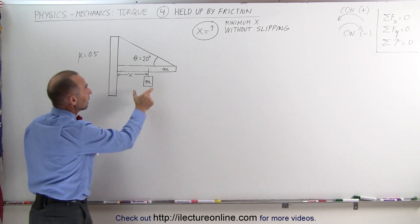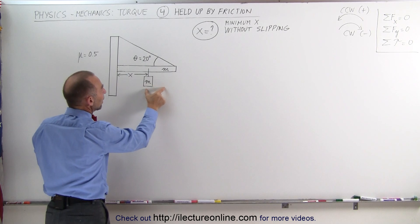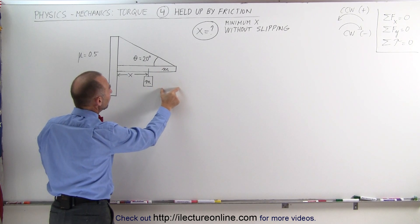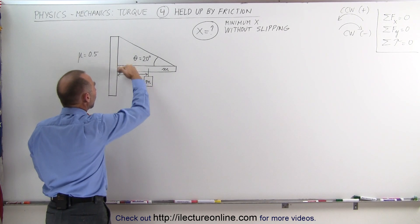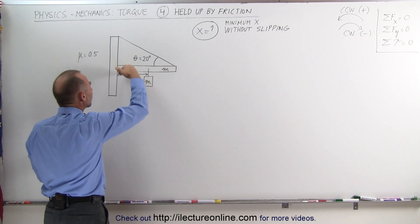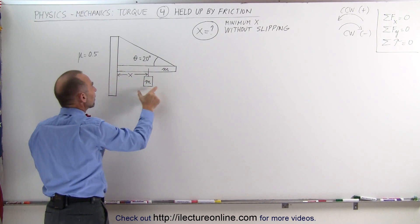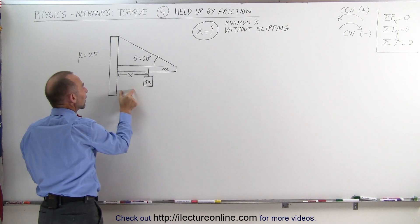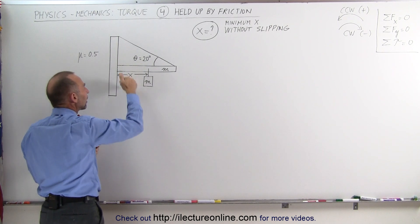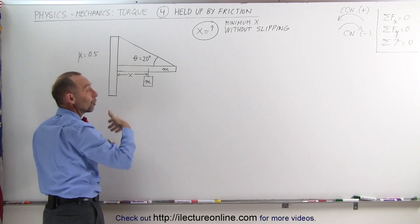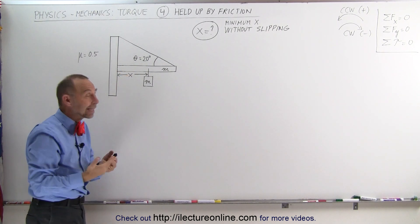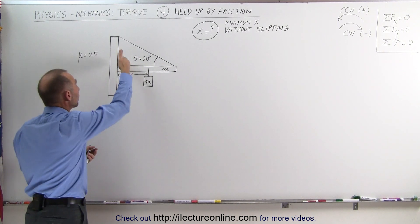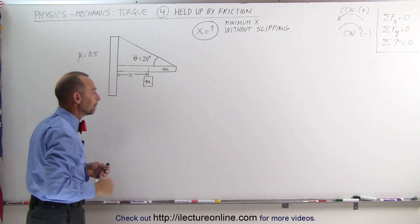The farther away you move this mass M, the less force will be pulling down on the beam at the post. But the closer you put the mass to the post, the greater the force there, and the greater the likelihood that the beam will slip down.